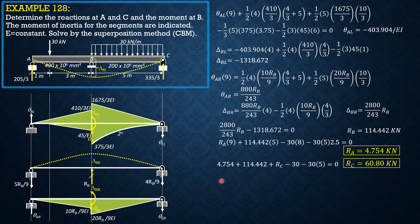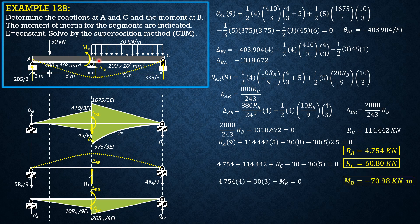For the moment at B, considering segment AB and summing moments about B: R_A (4.754) × 4, minus 30 × 3, minus M_B equals 0. Note that we consider AB and sum moments about B, so shear is not involved. M_B equals negative 70.98 kilonewton-meters. That's the solution for this problem.